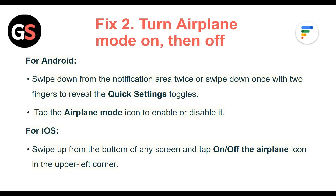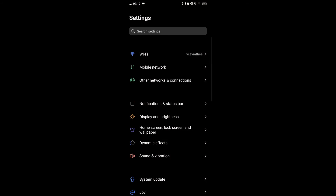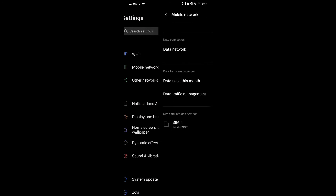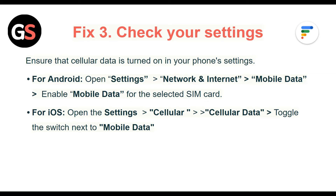Fix 3: Check your settings. Ensure that cellular data is turned on in your phone's settings. For Android, open Settings then Network & Internet then Mobile Data, and enable mobile data for the selected SIM card. For iOS, open Settings then Cellular then Cellular Data, and toggle the switch next to mobile data.